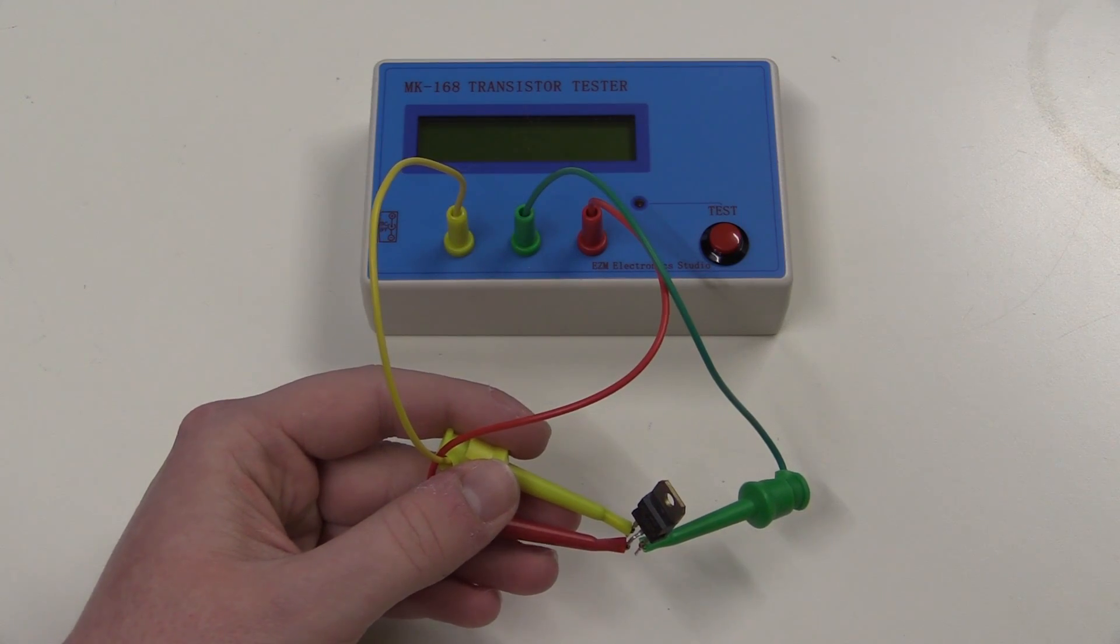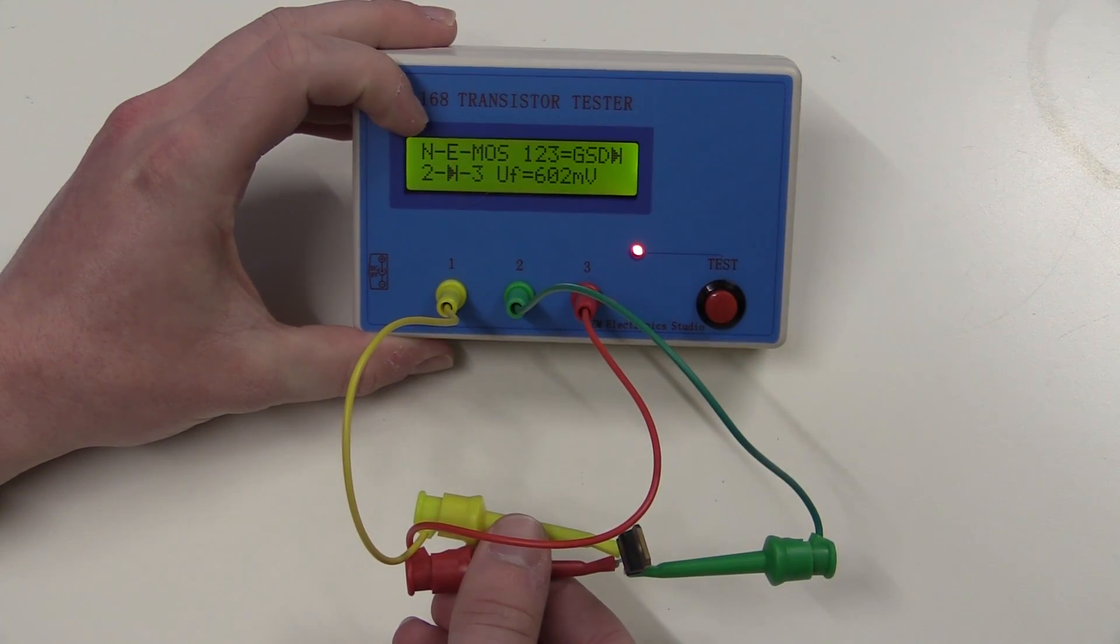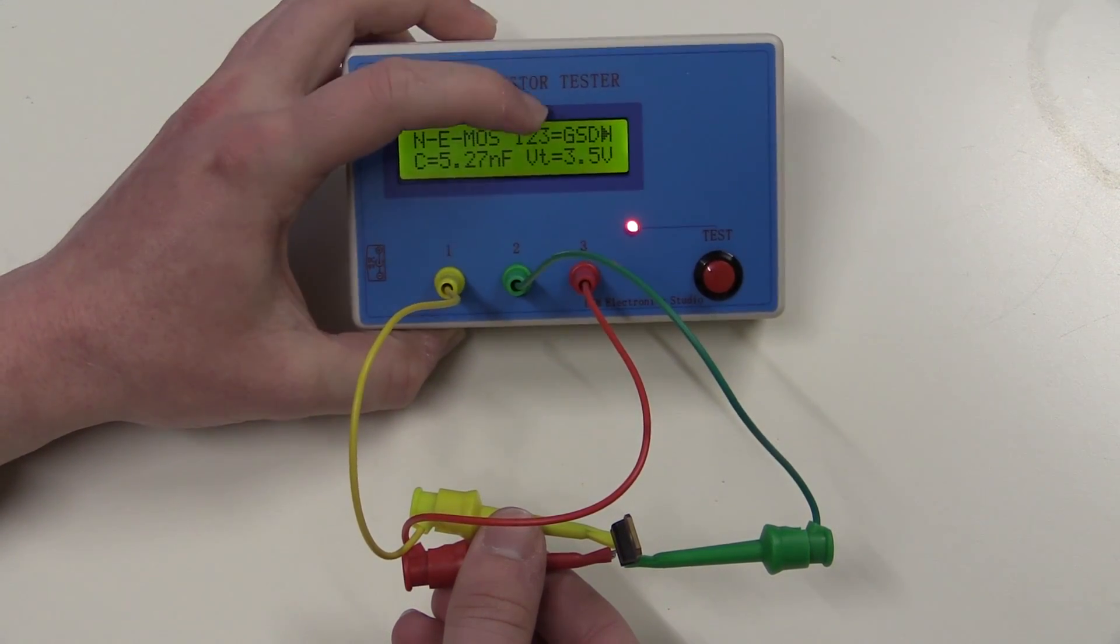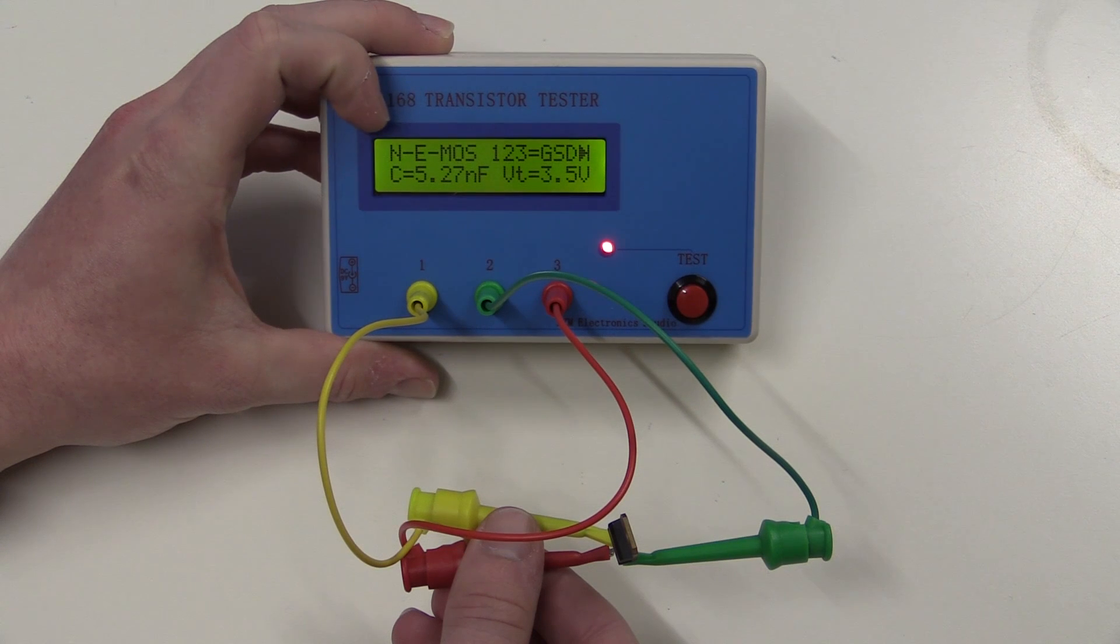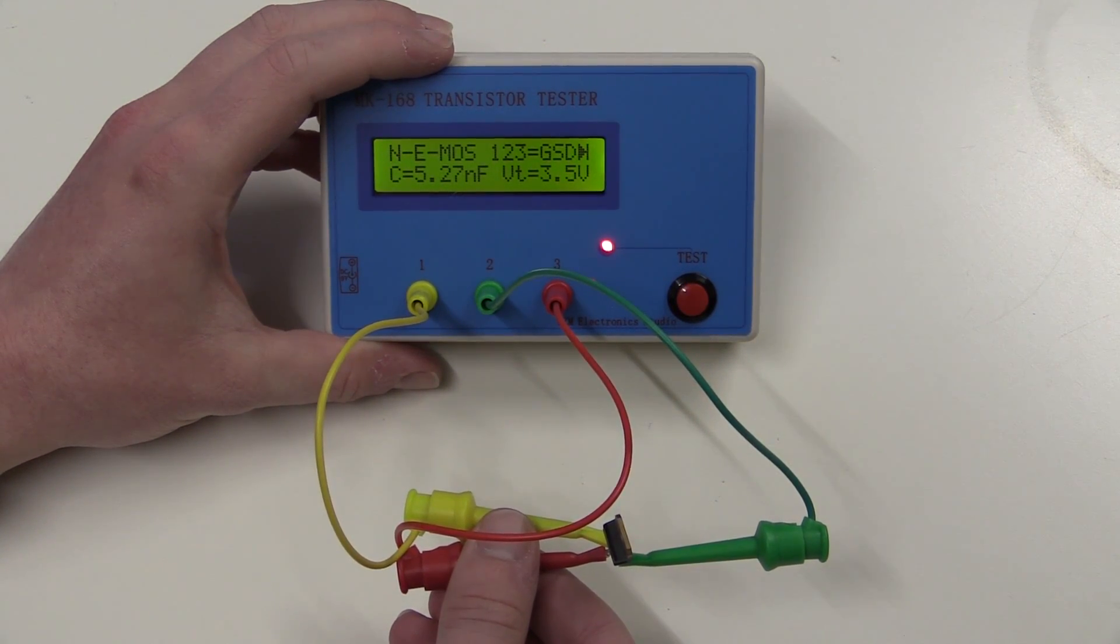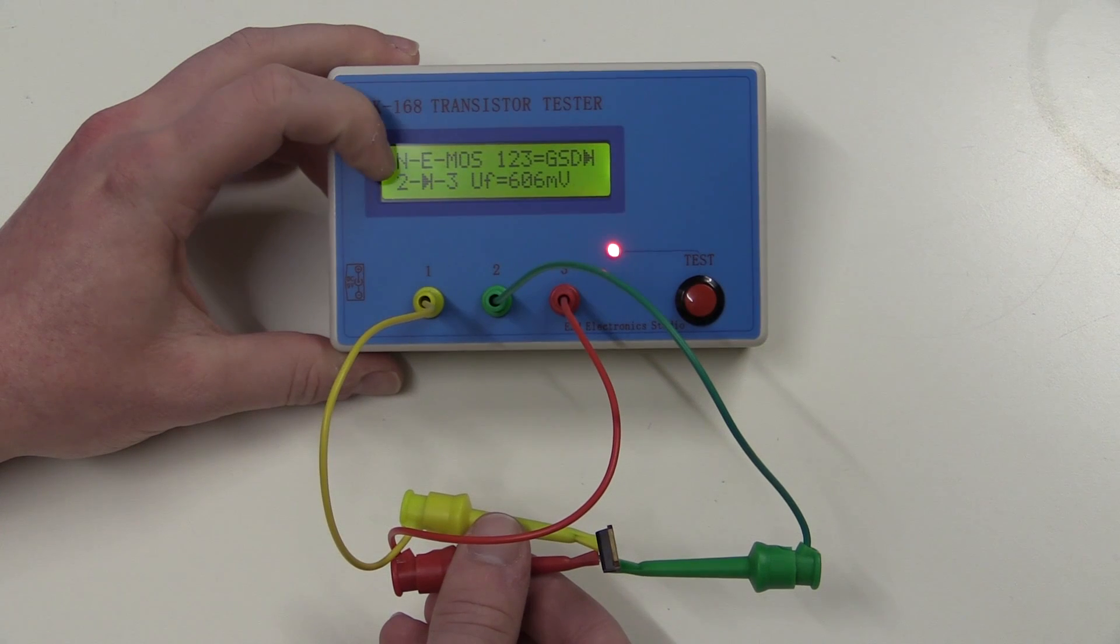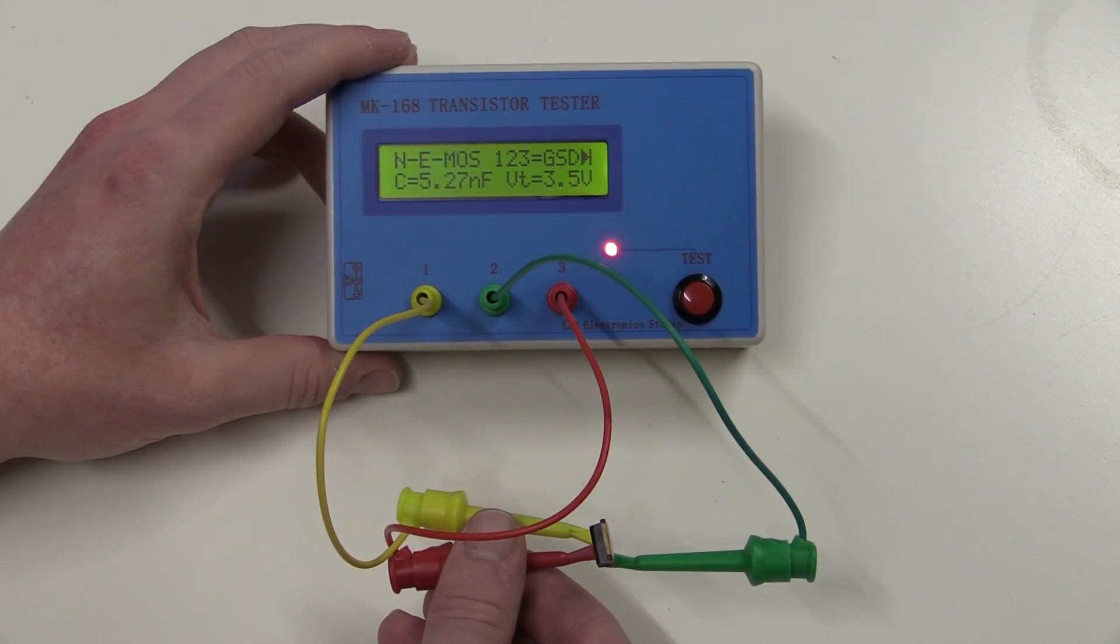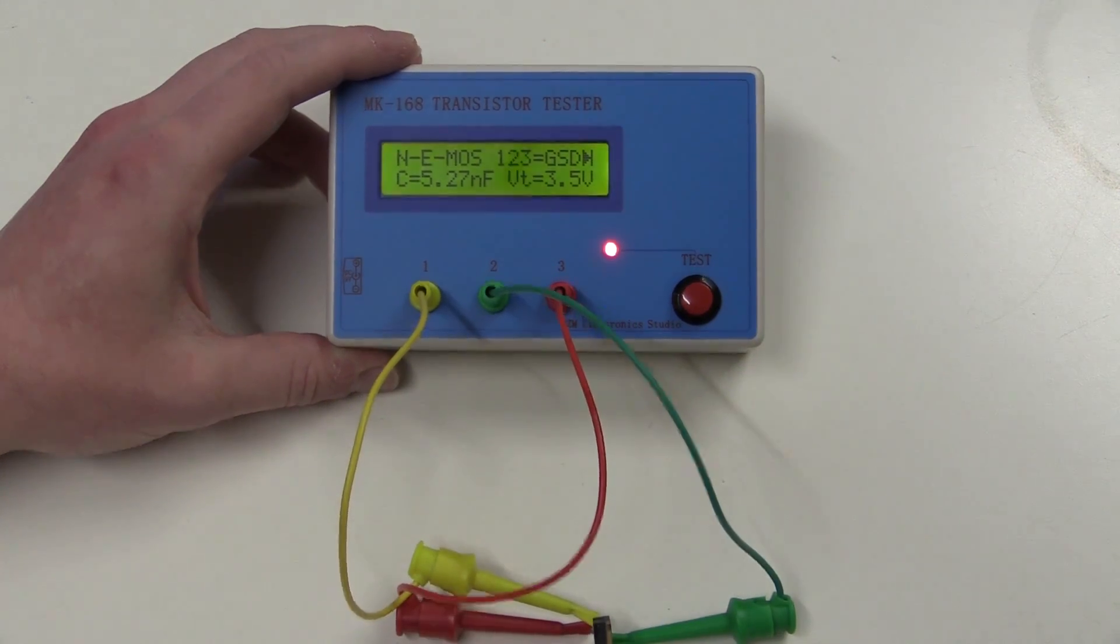This is yet another transistor. This time, however, it's not a common bipolar transistor. As you can see, this is a MOSFET. Negative E MOS, as you can see. Once again, our identification is right there. Gate, source, and drain, as well as a little diode that's integrated in the unit. We do get the capacity. I think that is probably the gate capacity. We do get the identification where the diode actually is hooked up to the leads, as well as the forward voltage of that. So that's what this is. MOSFET.